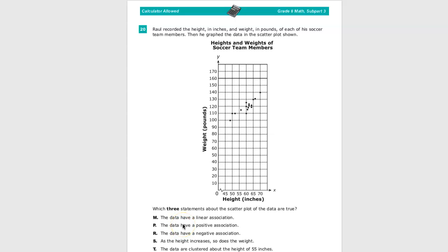P, the data has a positive association, which all positive means is that the two factors change in the same way. So if one increases, the other one increases. Technically, if one decreases, the other decreases as well. But when we have it set up like this, just look for both of them going up.